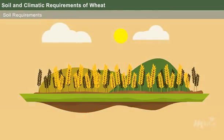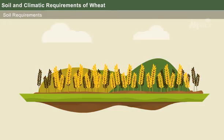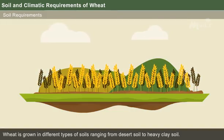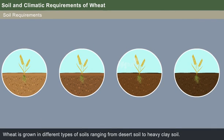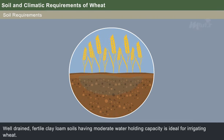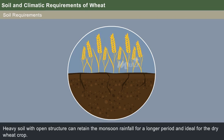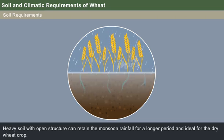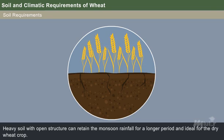Now let us discuss the soil and climatic requirements for wheat cultivation. Wheat is grown in different types of soils ranging from desert soil to heavy clay soil. Well-drained, fertile clay loam soils having moderate water-holding capacity are ideal for irrigated wheat. Heavy soil with open structure can retain monsoon rainfall for a longer period and is ideal for the dry wheat crop.